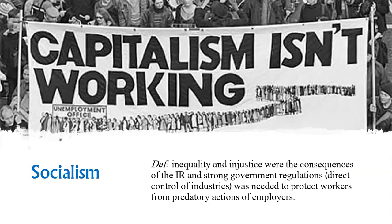The rise of capitalism led to the rise of socialism. Socialism sees inequality and injustice as consequences of the industrial revolution and argues that strong government regulation — direct control of industries — is needed to protect workers from predatory employers. Capitalism in theory works if managers treat workers well, but it doesn't always work out that way. Sometimes you have a great manager, sometimes a terrible one, so people started drifting toward socialism.